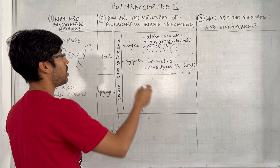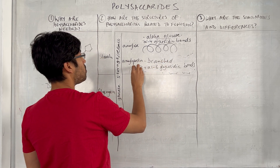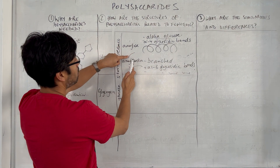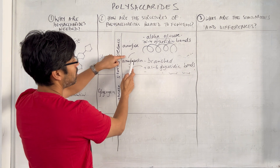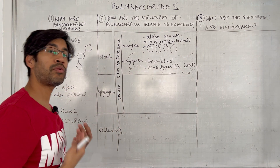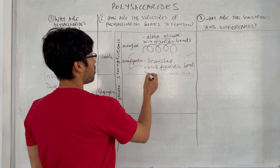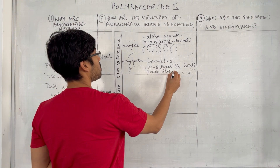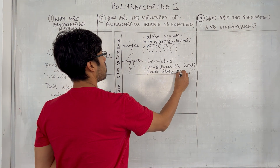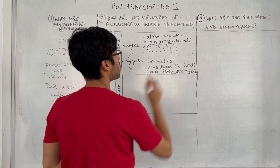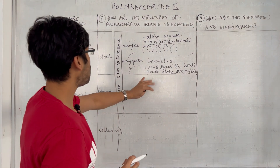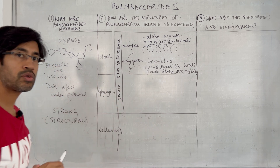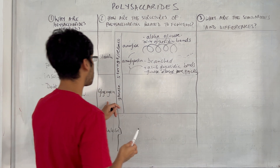Because amylopectin has multiple branches, there are multiple endpoints from which glucose can be released, so glucose can be released more quickly compared to amylose.